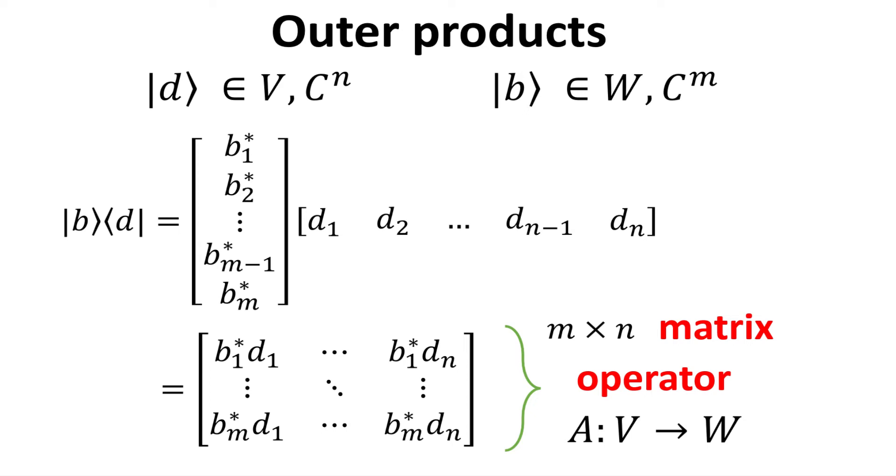Recall that a m by n matrix, when operates on a n dimensional column vector, will yield a m dimensional column vector. Thus, we call the outer product an operator, which maps a vector from the vector space V, of dimension n, to the vector space W, of dimension m.